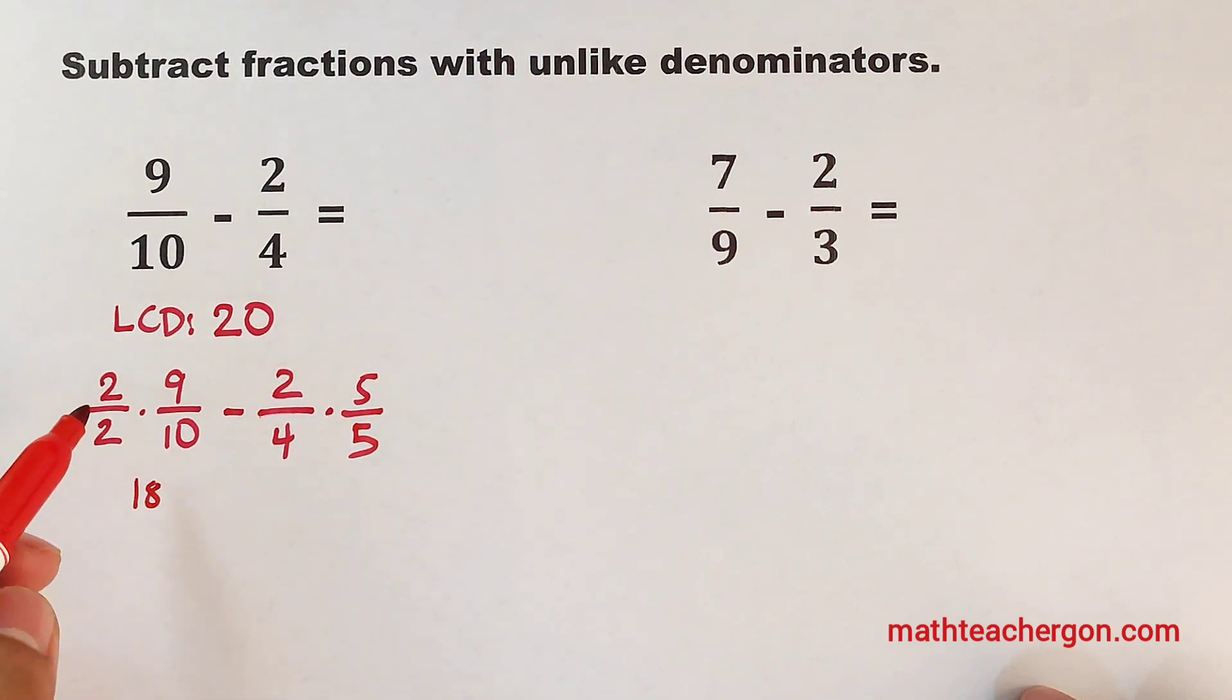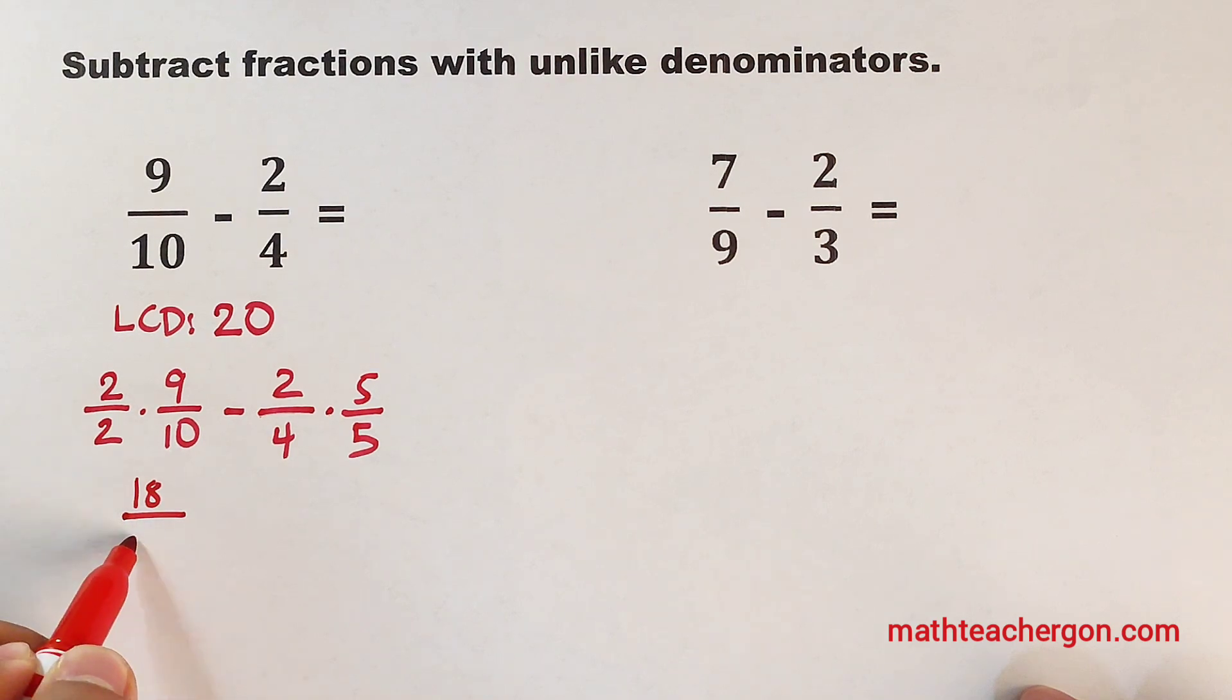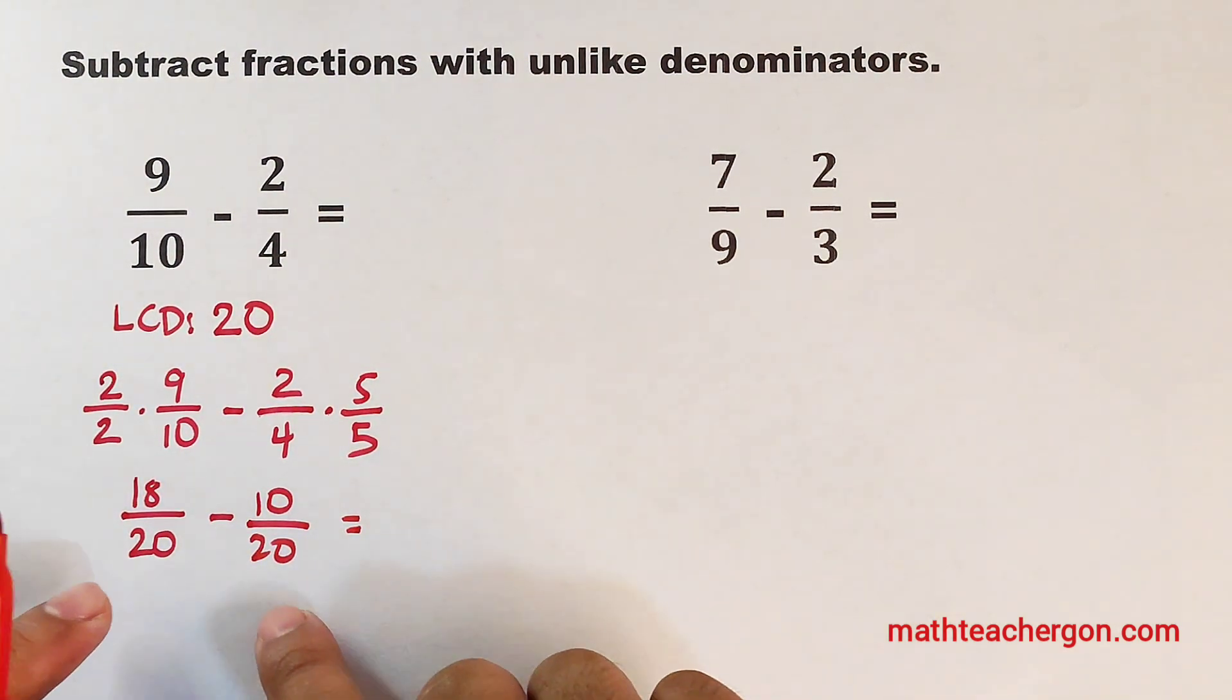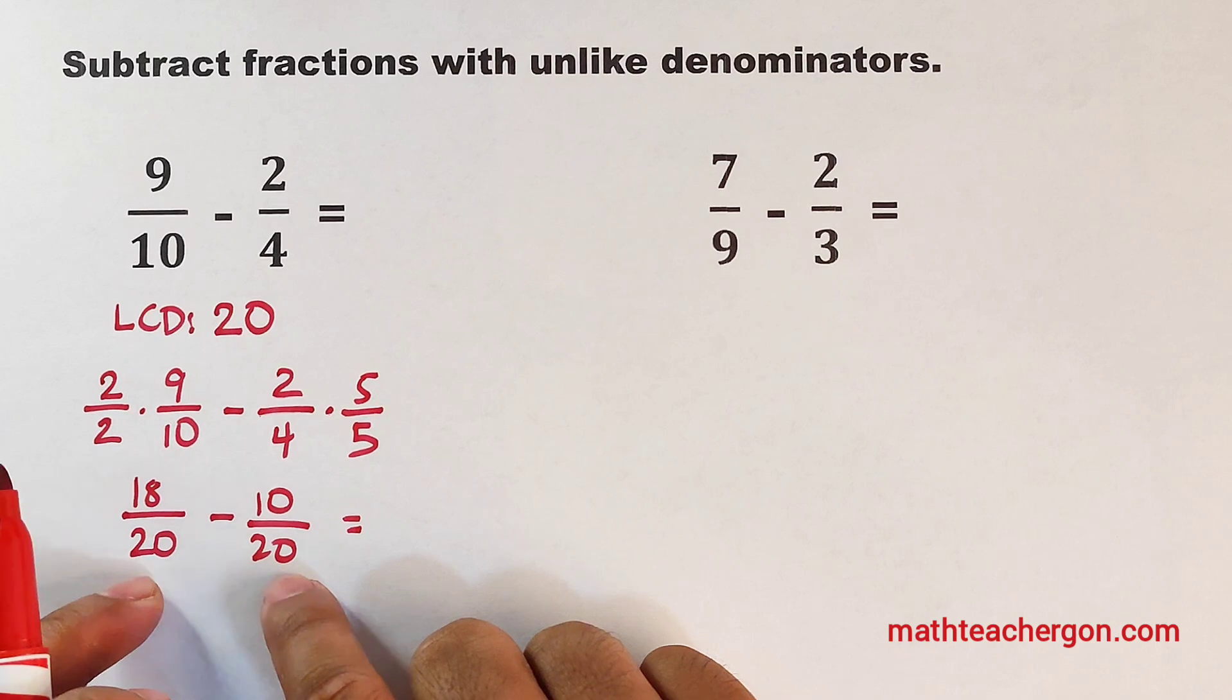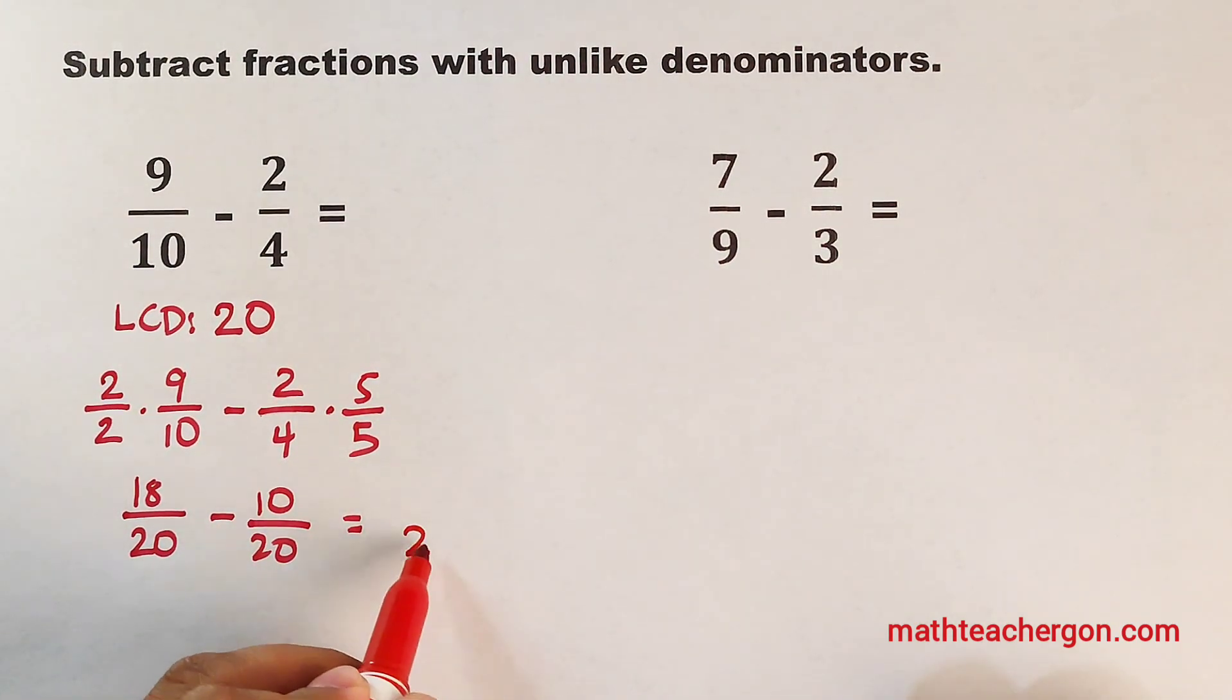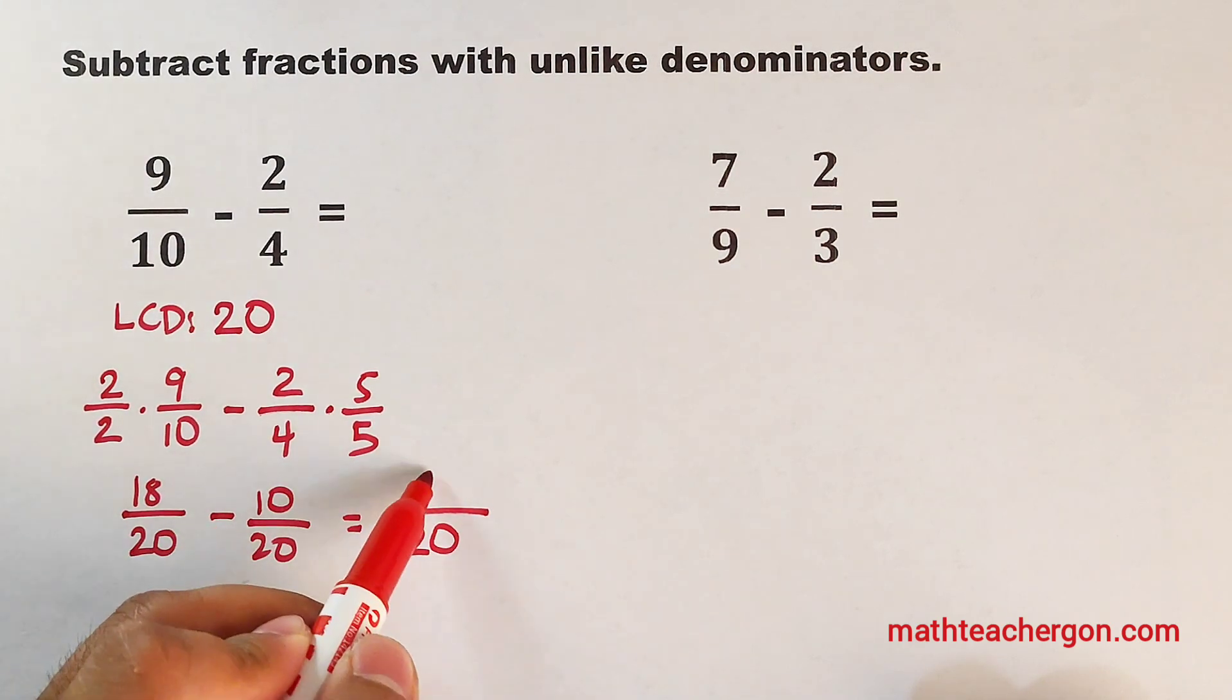And let's multiply 2 times 9, which is equal to 18 over, this is 20, minus 2 times 5, that would be 10 over 20. Now, same process, since we already have 20 in your denominator, we will copy it and then subtract the numerators, 18 minus 10, that would be 8.